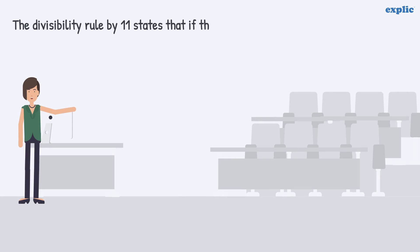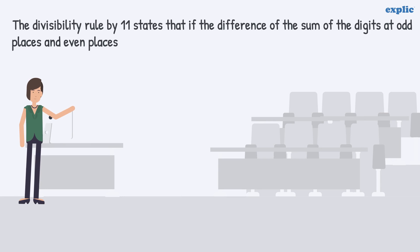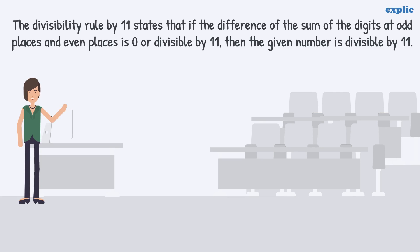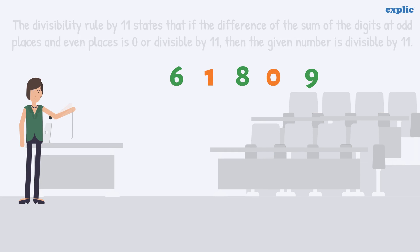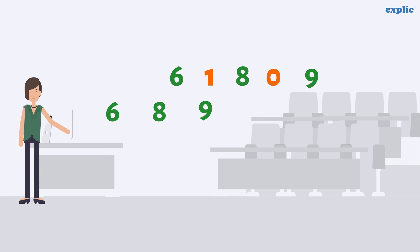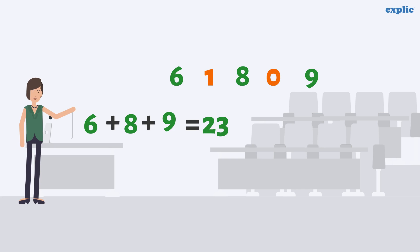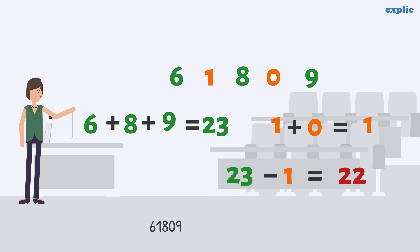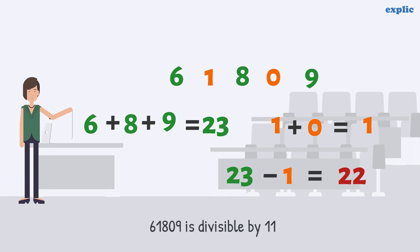The divisibility rule by 11 states that if the difference of the sum of the digits at odd places and even places of the number is 0 or divisible by 11, then the given number is divisible by 11. Let's take the example of 61809. Add the digits which are at odd places, then add the digits at even places. Subtract the two sums — if the difference is 0 or divisible by 11, then the number will be divisible by 11.